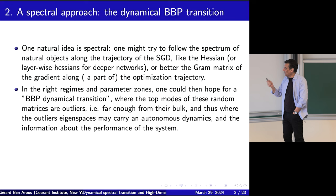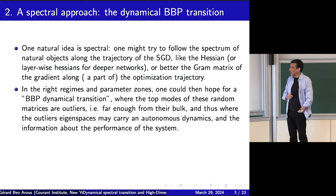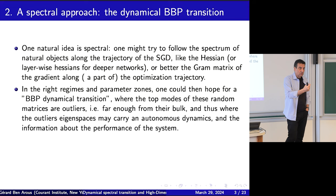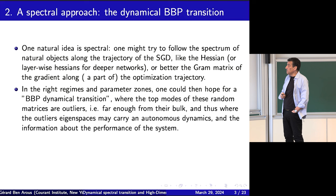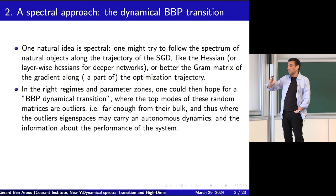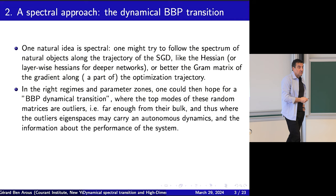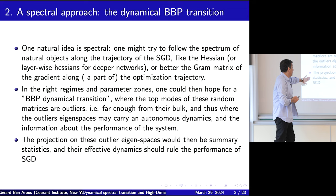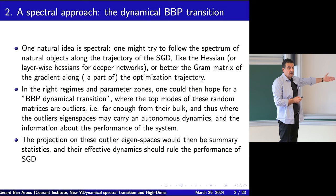In the right parameter zones, we could hope for a BBP transition — dynamical — where the top modes of these random matrices are outliers: the top eigenvectors are far from the rest, the eigenvalues are far from the bulk. The projection onto those outlier eigenspaces would be autonomous and would give you information about the performance of the system. So the projection would be our summary statistics and their effective dynamics should rule the performance of SGD. That is my credo.